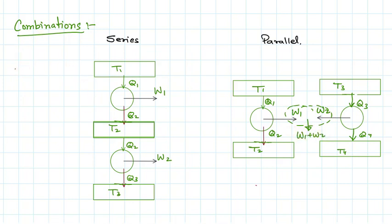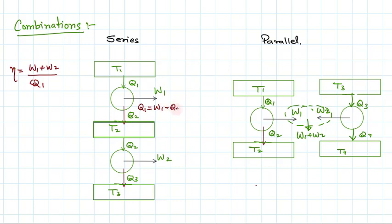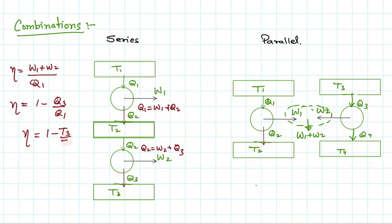For the series combination, efficiency = (W1 + W2)/Q1. Using energy conservation: Q1 = W1 + Q2 and Q2 = W2 + Q3. Substituting these two equations, the efficiency comes out to be η = 1 - Q3/Q1, and for a Carnot engine in series this is η = 1 - T3/T1.